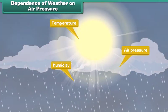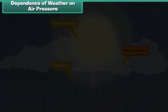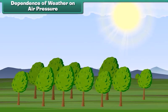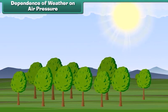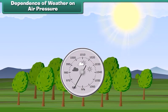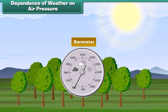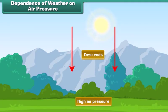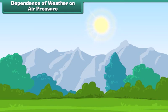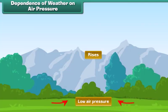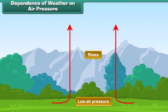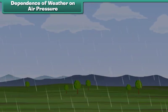Another factor is air pressure. You might not realise it, but the air around you actually has a weight. We measure air pressure with a device called the barometer. In areas of high pressure, the air slowly descends to the earth's surface, and high pressure areas are associated with clear sunny days. In areas of low pressure, air rises up into the atmosphere — low pressure areas have high humidity, clouds, rain and other kinds of precipitation.